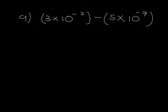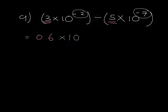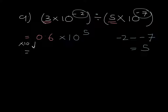Last example: 3 times 10 to the negative 2 divided by 5 times 10 to the negative 7. Start with 3 divided by 5, which is 0.6, times 10 to the power. We have negative 2 minus minus 7 — remember it's a division — which gives us a power overall of 5. Now, this answer is not in standard form. We multiply 0.6 by 10 to give us 6.0, which means we divide the power by 10, giving us a power of 4. Final answer: 6.0 times 10 to the power of 4.